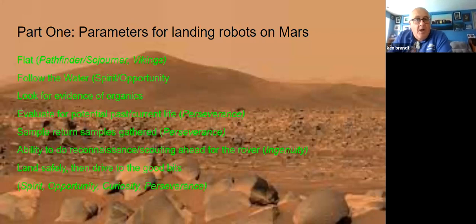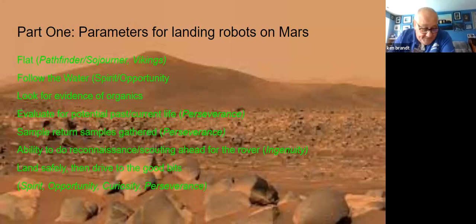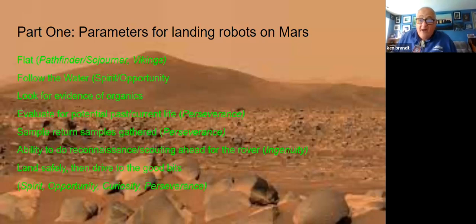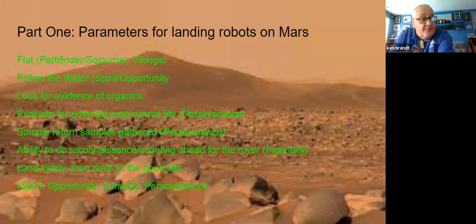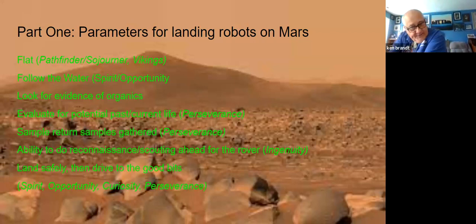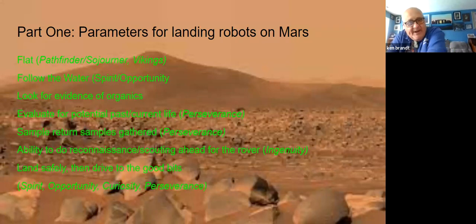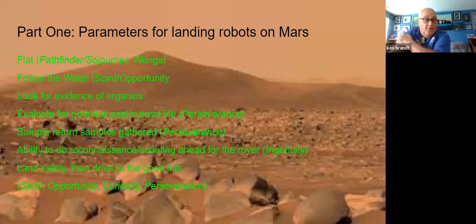Six years after that, NASA launched two rovers: Spirit and Opportunity. Their job was to follow the water — looking for direct, measurable evidence of the presence of liquid water in the past on Mars, and both rovers found it. Spirit had to do a little driving to get there. We're looking at a panorama Spirit took on Mars of the Columbia Hills, which is where we ended up finding evidence for water. Opportunity landed inside a crater with a sedimentary rock outcrop — evidence of water right in front of it. NASA did an excellent job selecting Meridiani Planum with its deposits of hematite as a landing site.